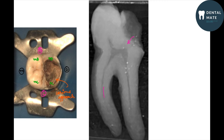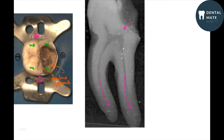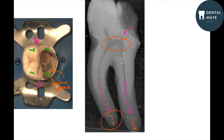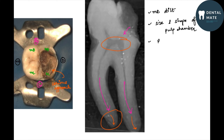In the radiograph, we can see caries which has involved the pulp. The roots are curved distally. In the apical third of the mesial root we can see it is curved slightly mesially, whereas the distal root is curved distally. We evaluate the pulp chamber for pulp stones, the size and shape of the pulp chamber, and we can measure the root length preoperatively. We also look at the mesiodistal tilt of the tooth and the roof thickness.